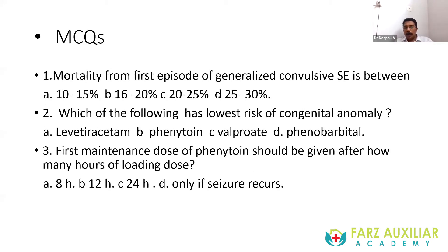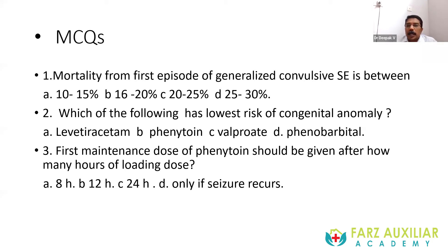We will now go to the MCQs — there will be 10 total, 5 A-type and 5 K-type questions. The first question: the mortality from the first episode of generalized convulsive status seizure is between — A: 10 to 15%, B: 16 to 20%, C: 20 to 25%, D: 25 to 30%.